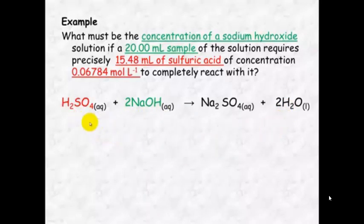Once that is done, we put the information that we know from the question. Volume of sulfuric acid is 15.48 mL. Very important that you change this into liters, that is one of the biggest places where people make mistakes. Volume must be in liters. The concentration is 0.06784 molar. Pop that in directly underneath so you know that it relates to the sulfuric acid.